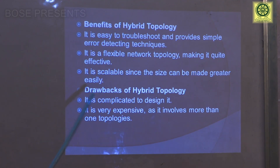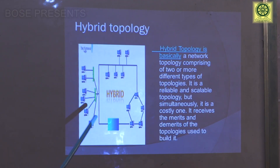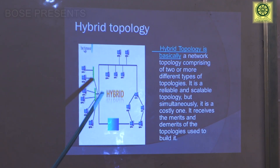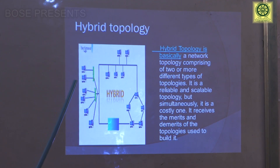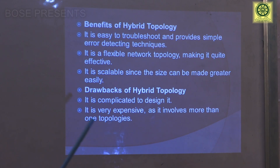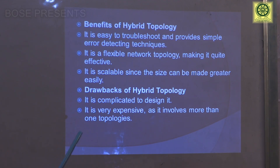The drawbacks of hybrid topology: it is very complicated to design as all topologies are involved. The nodes connecting to computers must be connected correctly to provide non-interference data transmission. It is also very expensive as it involves more than one topology.